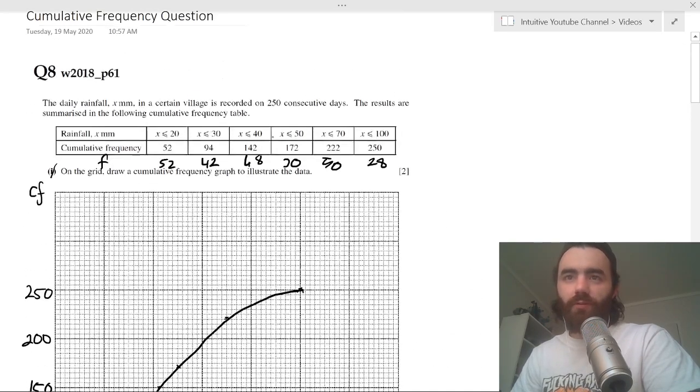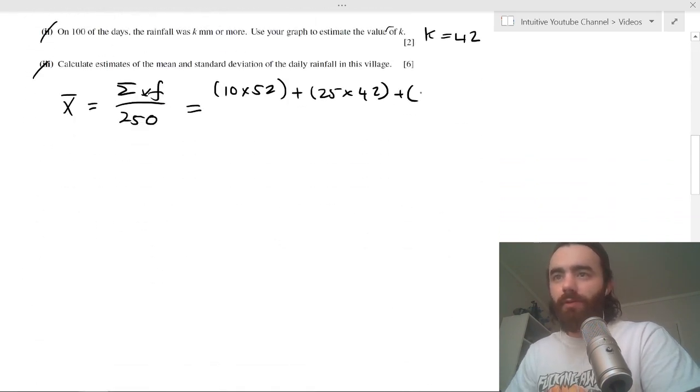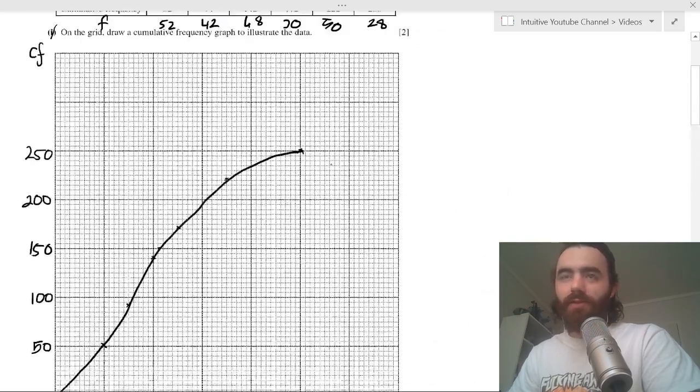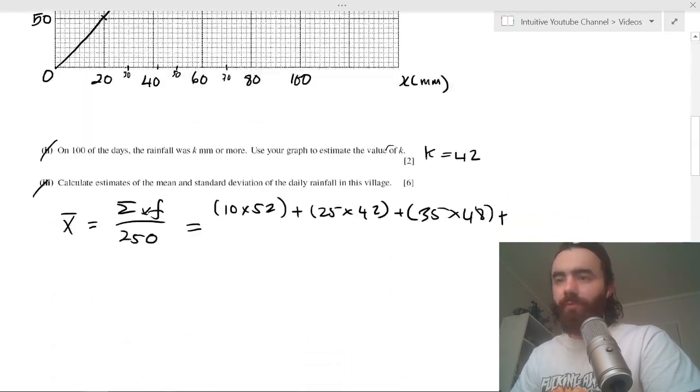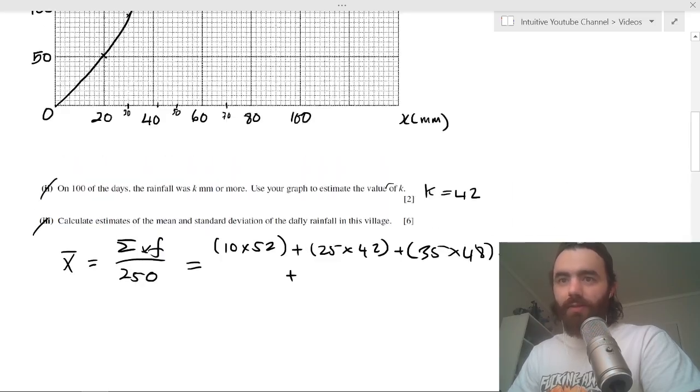You just continue to do this. So between 30 and 40 will be 35, and that occurs 48 times, so you got 35 times 48, plus 45 times 30.